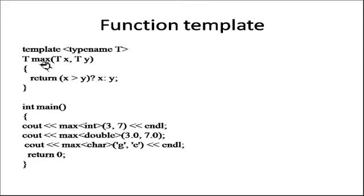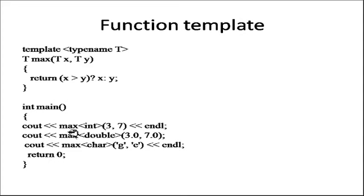Here is an example of a function template — the max function. The syntax is: template <typename T>, then return (x > y) ? x : y — this is a ternary condition. In int main, max<int> is called with T=int, passing 3 and 7, so these values are copied into x and y and it returns the maximum. Similarly, max<double> and max<char> — here a character will be sent, so it will behave as a character value. The type changes according to our function call.